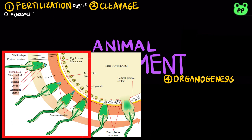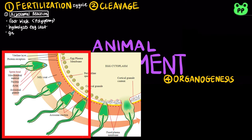The acrosomal reaction is triggered when the sperm meets the egg. The acrosome at the tip of the sperm releases hydrolytic enzymes that digest material surrounding the egg, which is then penetrated by growing actin filaments. The fusion of the sperm and egg depolarizes the egg cell membrane and sets up a fast block to polyspermy, or the fertilization of the egg by more than one sperm.